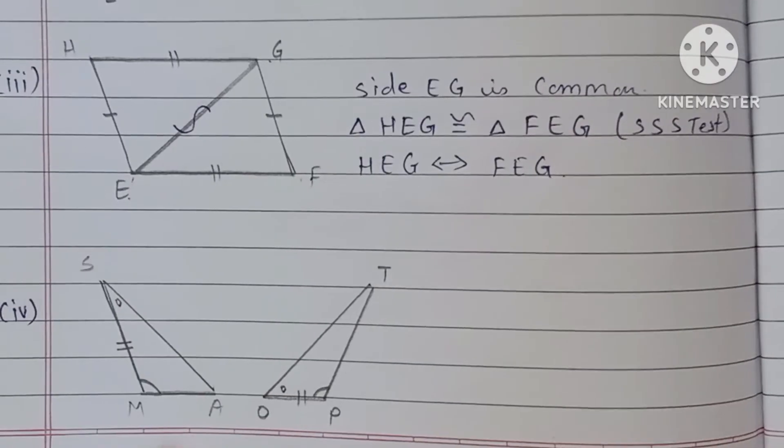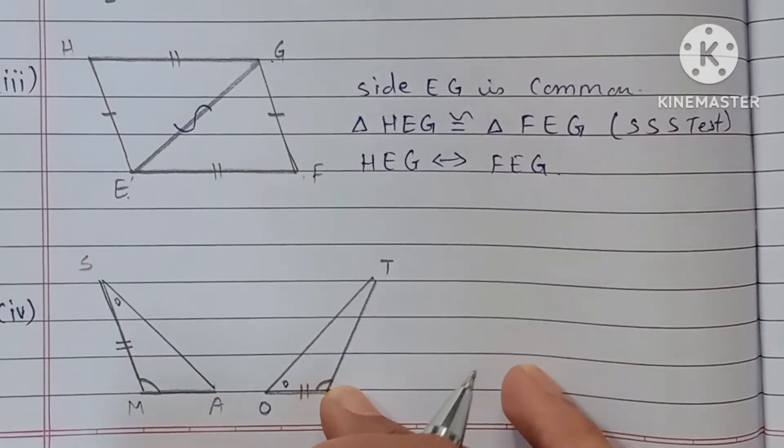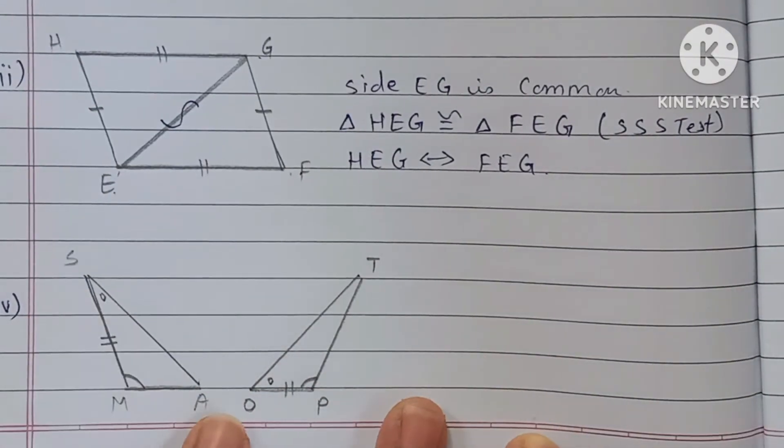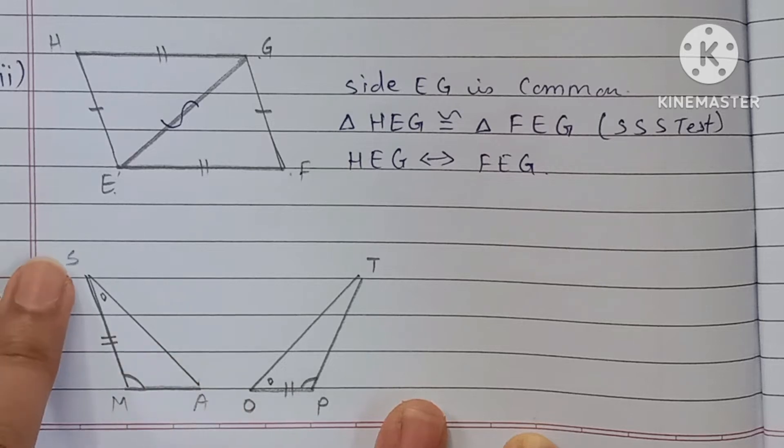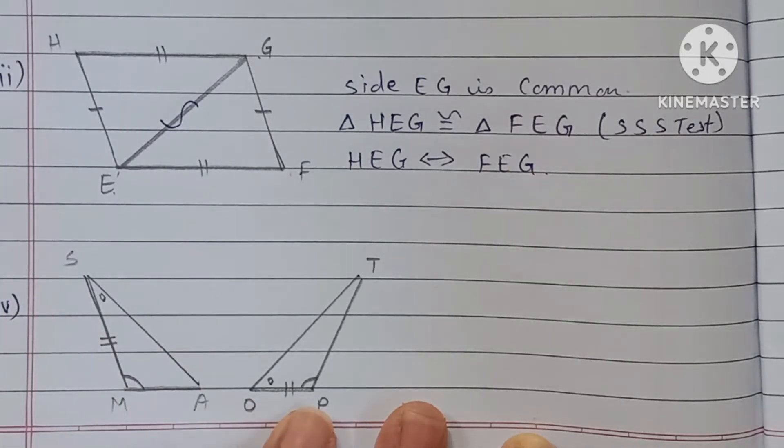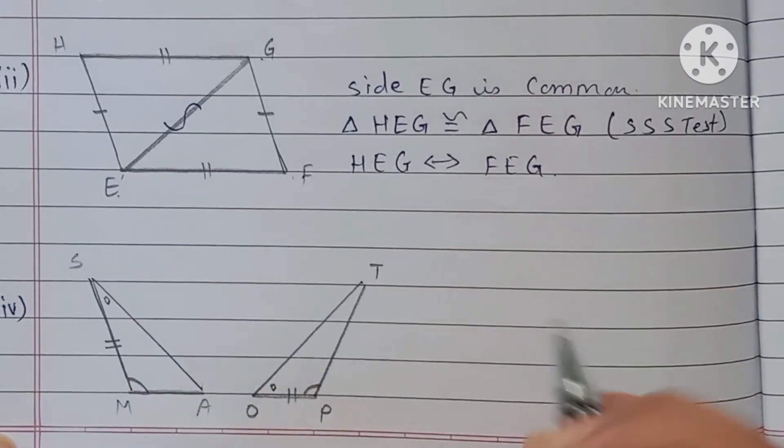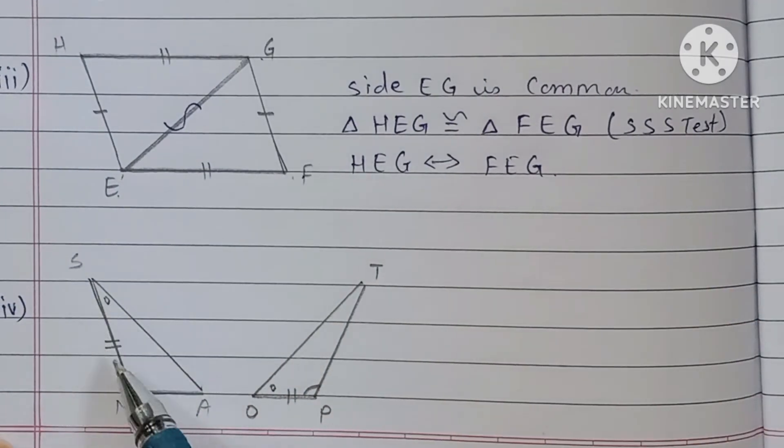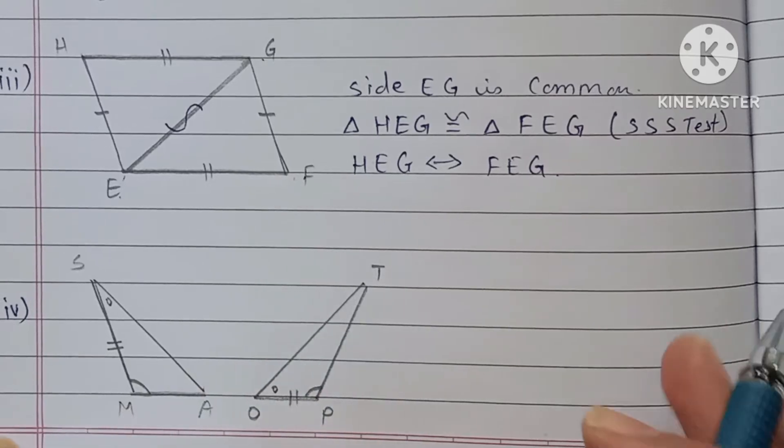Next, here two different triangles are given. For angle S, angle O is congruent. For side SM, side OP is congruent. For angle M, angle P is congruent. Means angle-side-angle. These two triangles are congruent by ASA test.